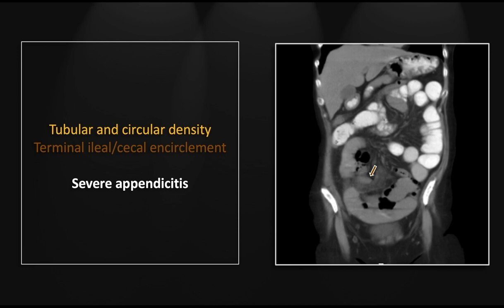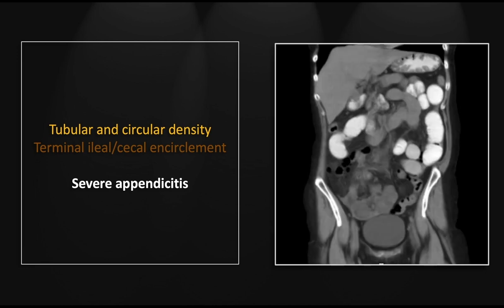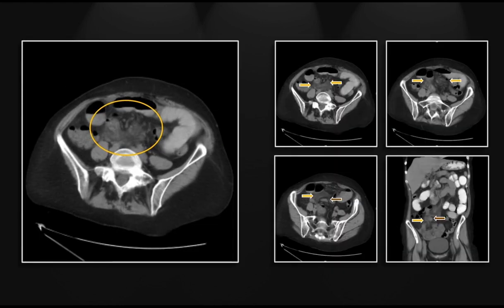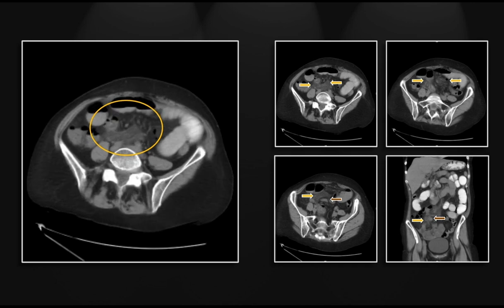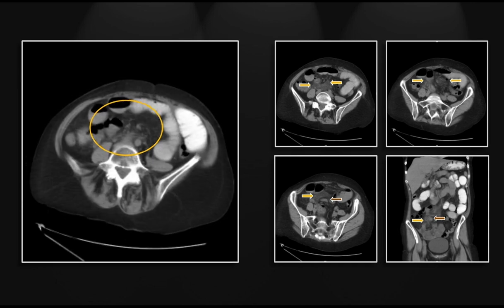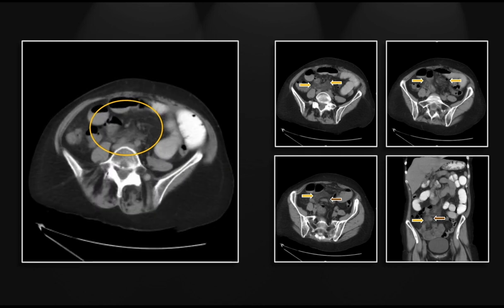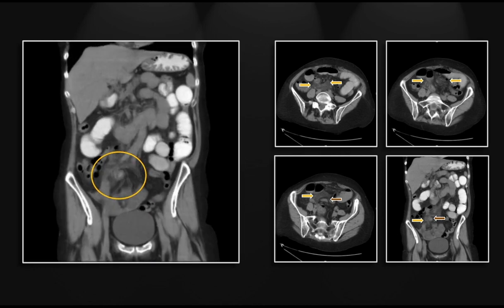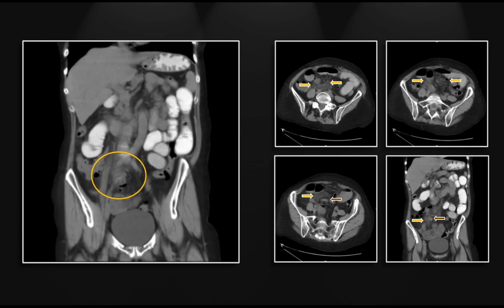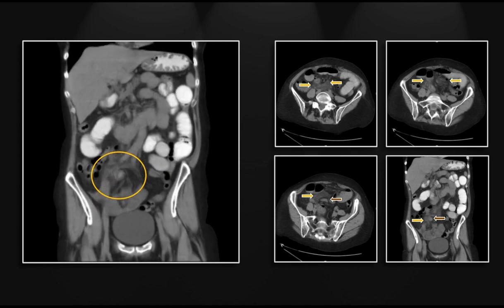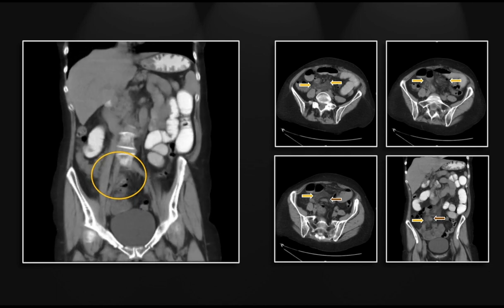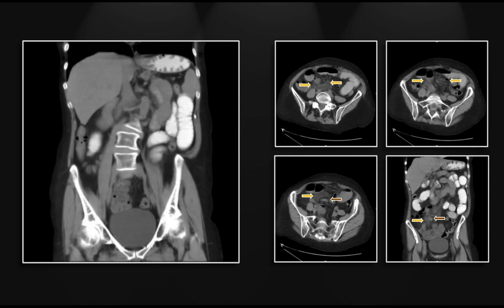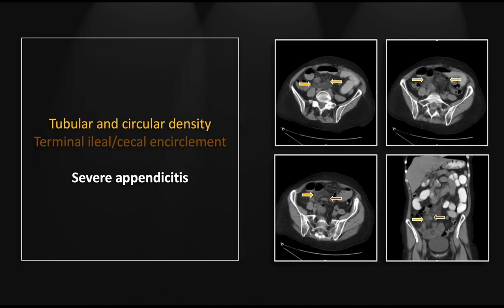Even further back, you can again see that barely visible appendix and the encircled terminal ileum. Follow it in a complete circle — that ghost of a dilated, stranded appendix makes a perfect circle that encircles the terminal ileum, visible on the coronal as well. That is one of the more severe cases of appendicitis I've ever seen, with associated obstruction of the terminal ileum.